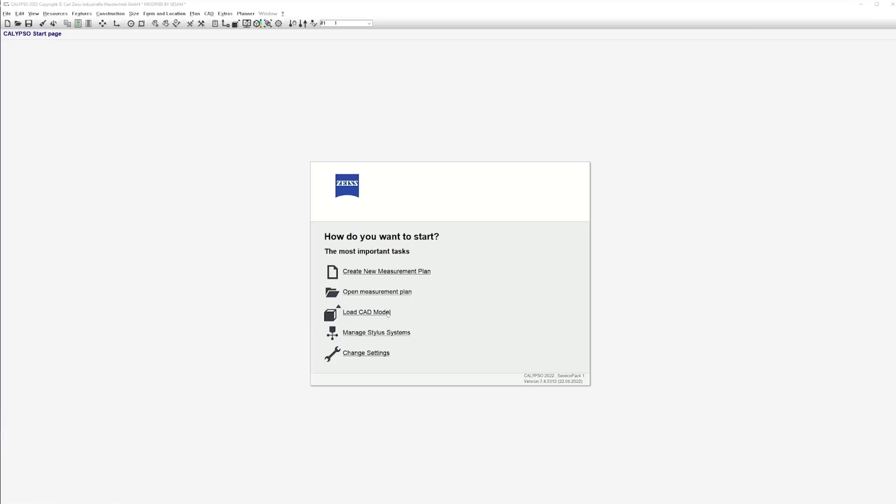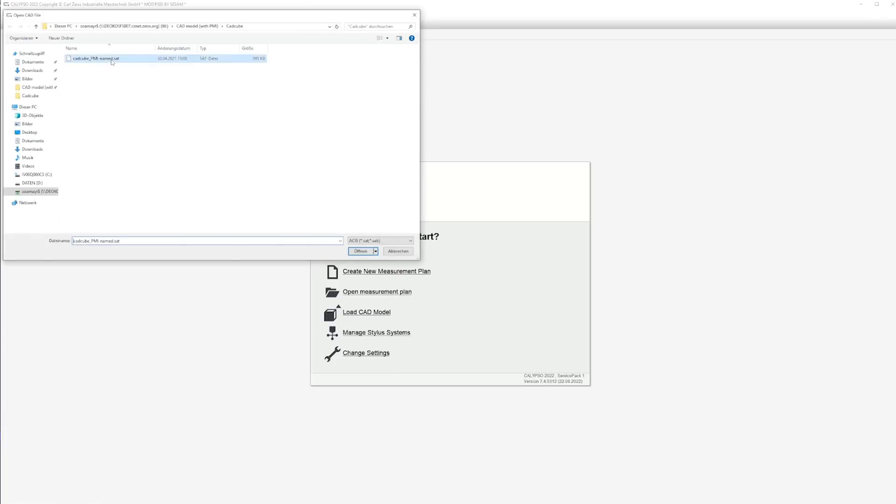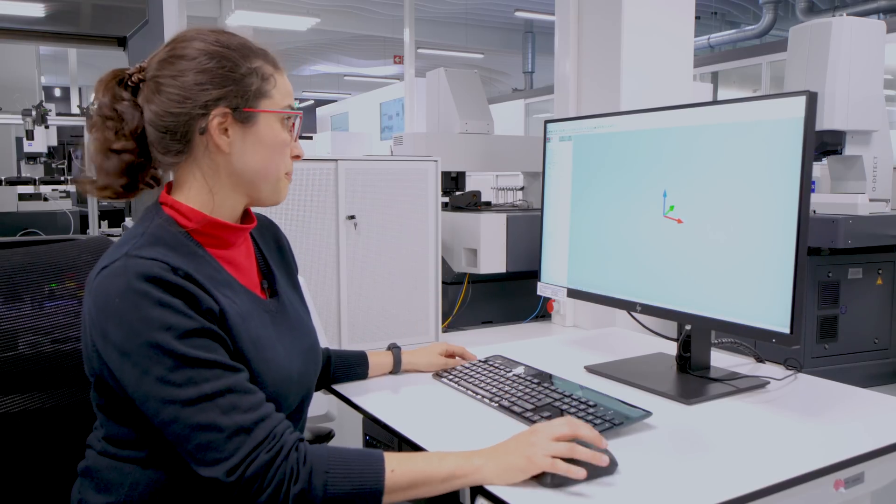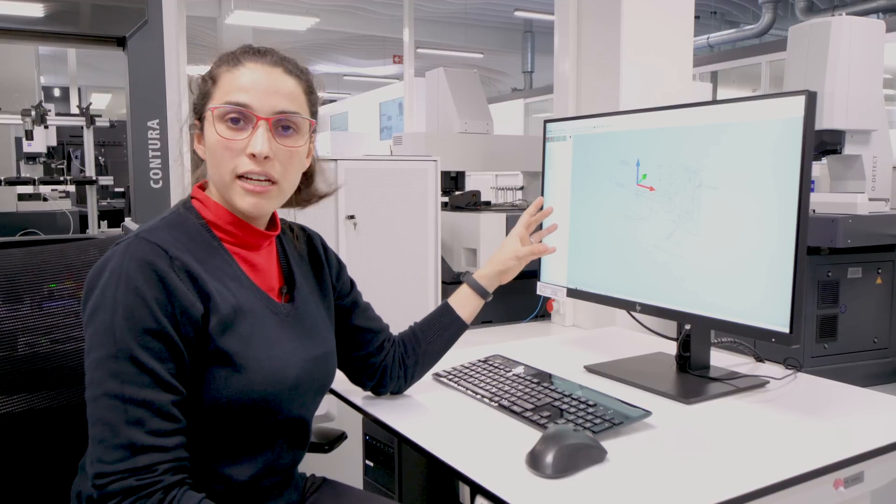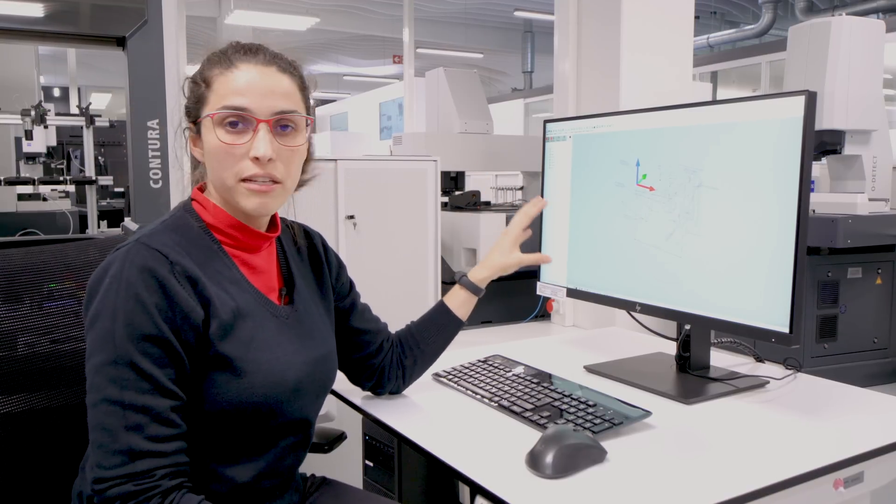The first thing for sure is we need to select our CAD file that contains PMI there. Once we load the CAD file in Calypso, the program will display us all the information that is available there.